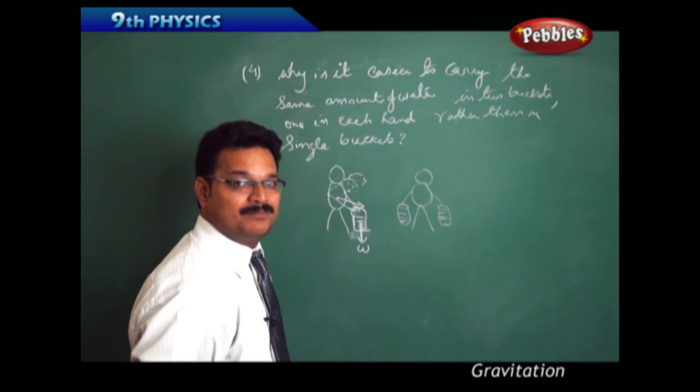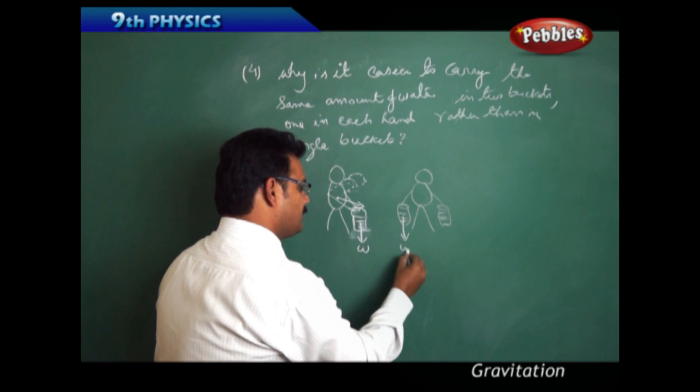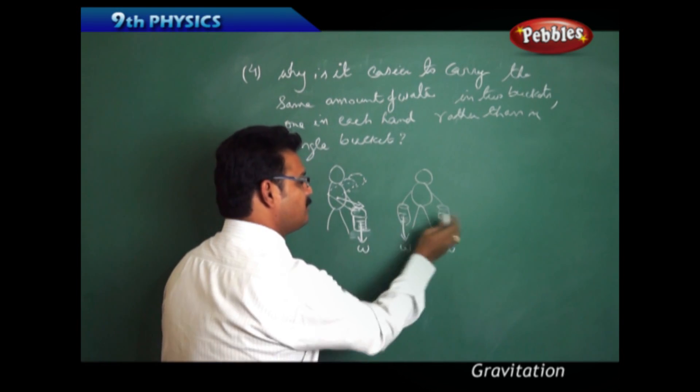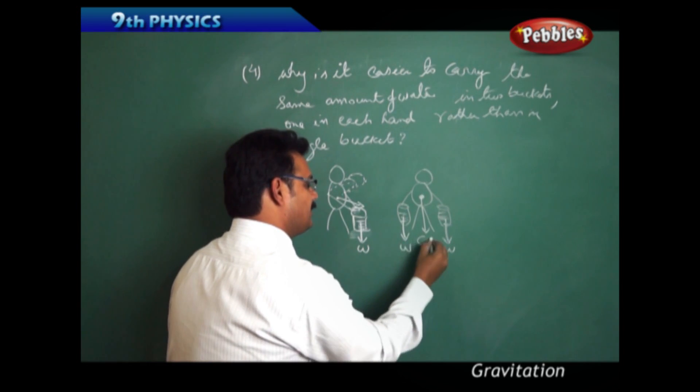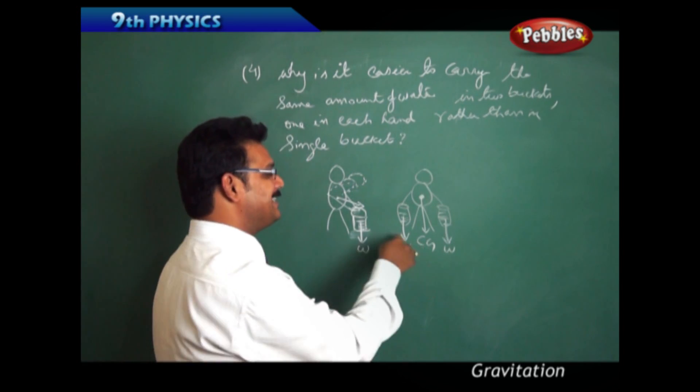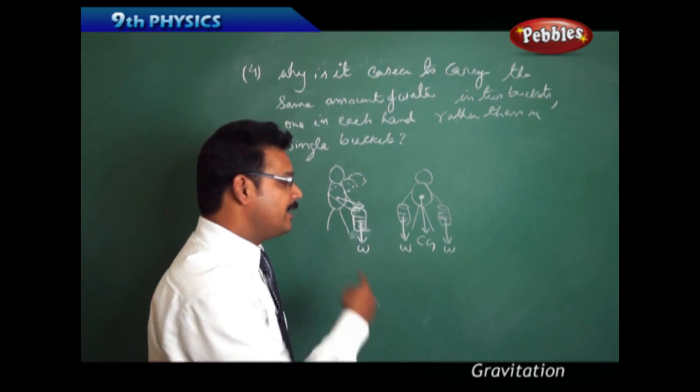Now coming to this: here center of gravity does not change because this weight is uniformly distributed around the person. So the center of gravity is still at the center, so the person can easily carry the buckets and move in the forward direction.